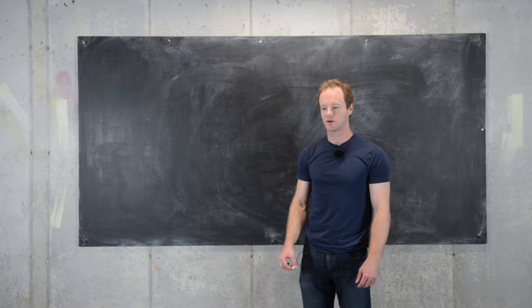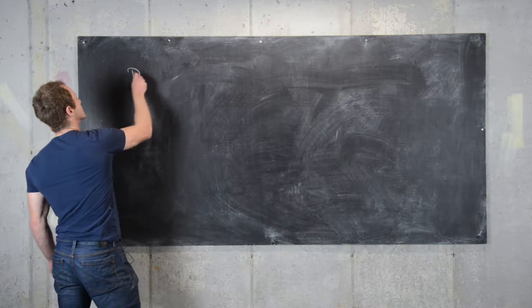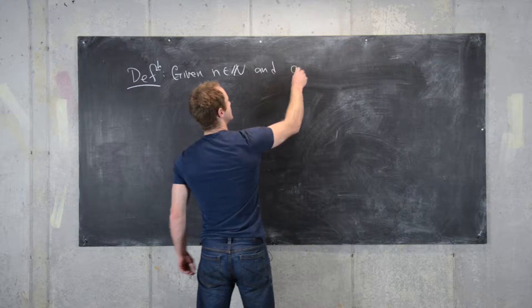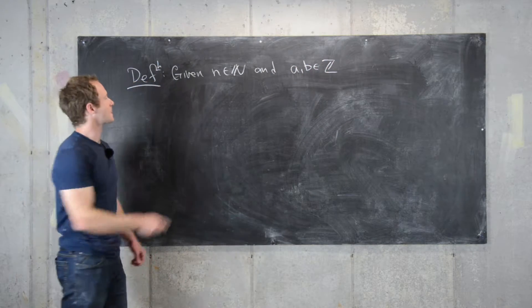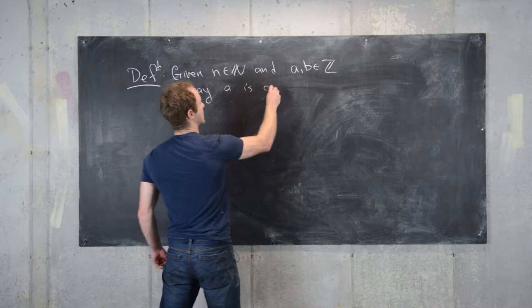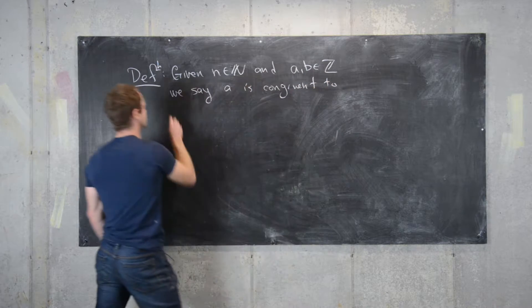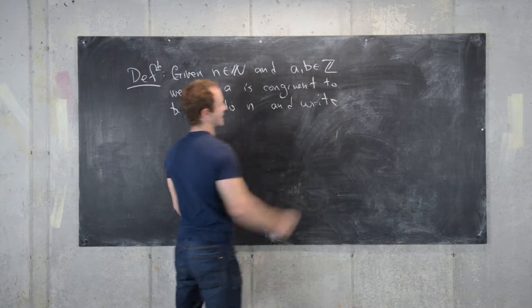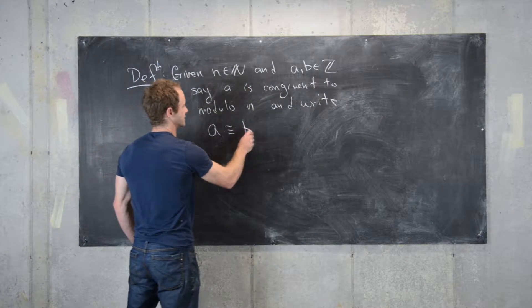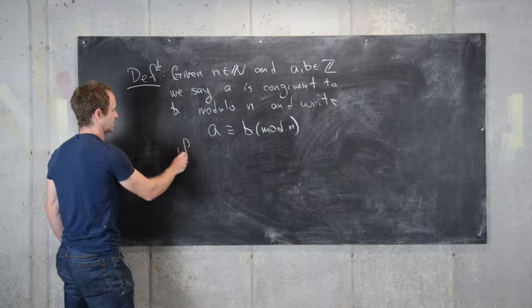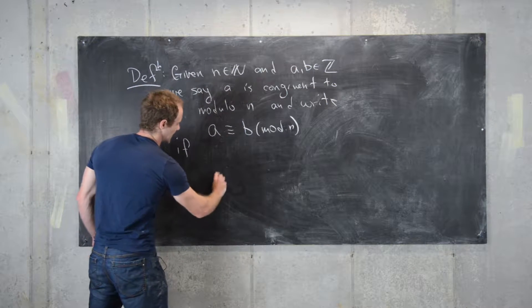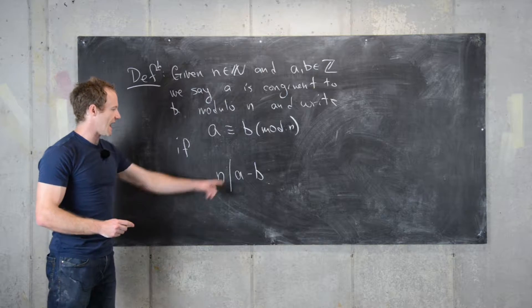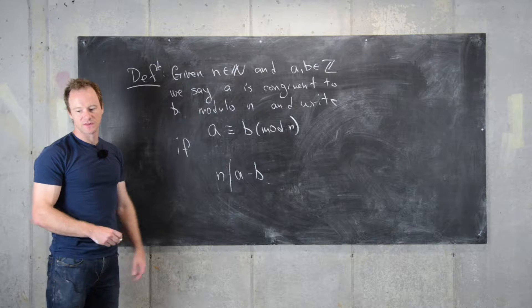In this video we're going to talk about the notion of congruence in the integers. Given a natural number n and two integers a and b, we say a is congruent to b modulo n — written a ≡ b (mod n) — if n divides a minus b. An equivalent definition is that a and b have the same remainder when divided by n.